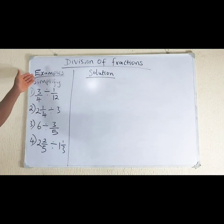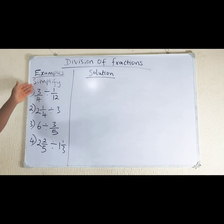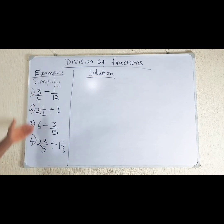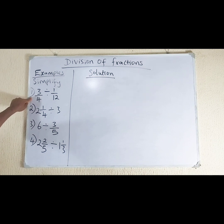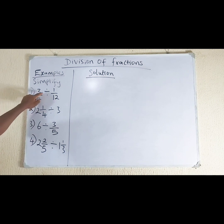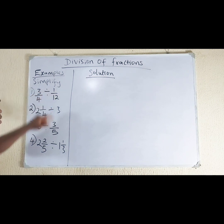We have examples to simplify. We start with number 1: 3 over 4, divided by 1 over 12.